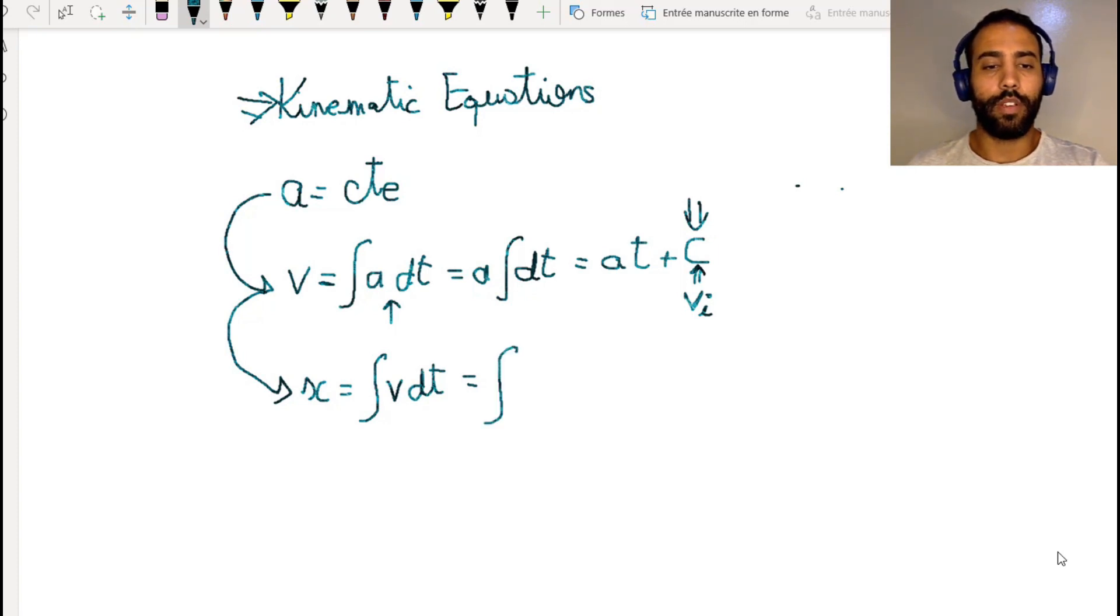Velocity this time is different from the acceleration - it's not constant. The velocity is equal to at plus v_i. So let's substitute this into the equation.